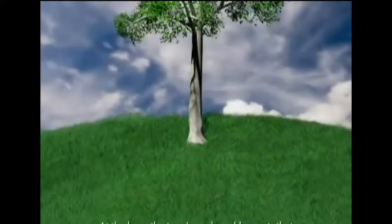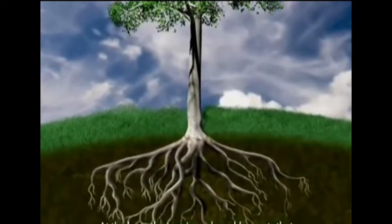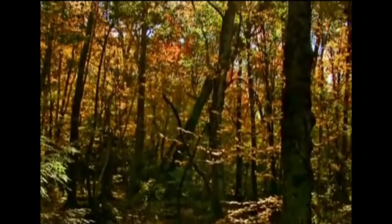Thus two things are transported in a plant body: water from root to leaves and food from leaves to various parts of the plant.